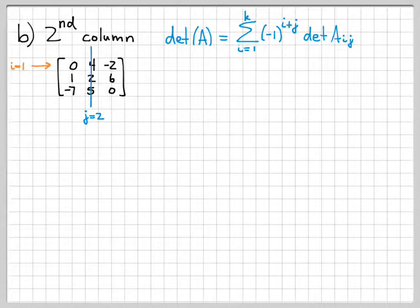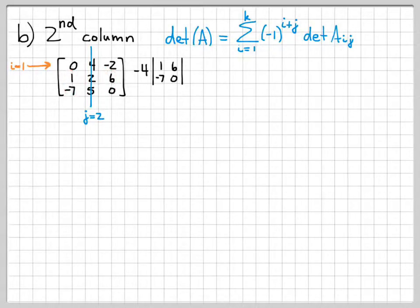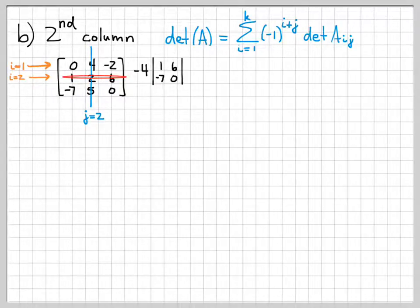When i equals 1: 1 plus 2 equals 3, giving a negative sign. The entry is 4, so we get negative 4 times the remaining submatrix. When i equals 2: 2 plus 2 equals 4, giving a positive sign. The entry is 2, giving plus 2 times its submatrix. Then i equals 3: 3 plus 2 equals 5, an odd number, giving a negative sign, so negative 5 times the last submatrix.